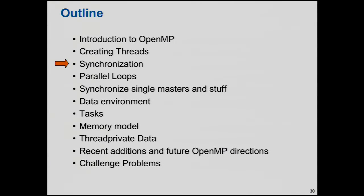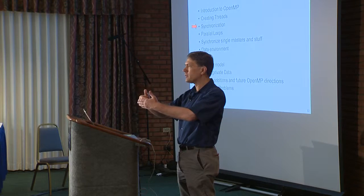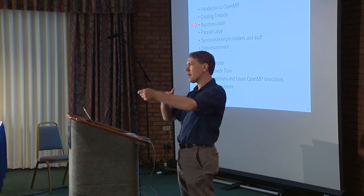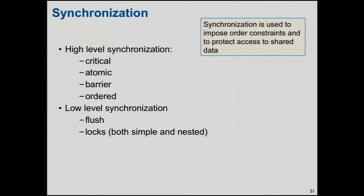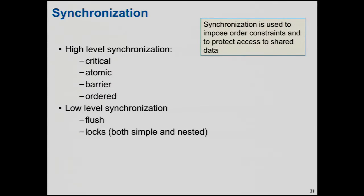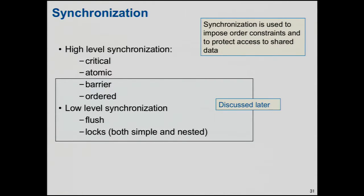So far, the only synchronization we've been using is at the end of the parallel region — all threads are done, and you're guaranteed that once you get outside the parallel region all threads have finished their work. You essentially have a barrier at the end of the parallel region. But OpenMP provides many different mechanisms for synchronization, and we're going to focus first on critical and atomic, which are probably the two most basic synchronization mechanisms.